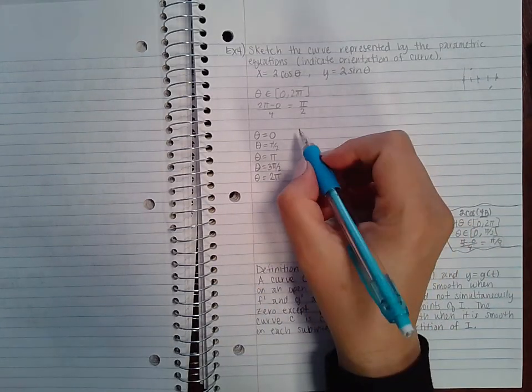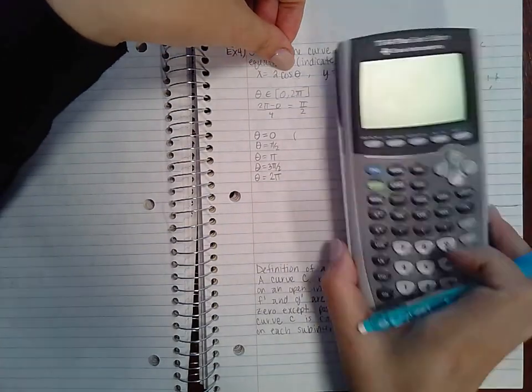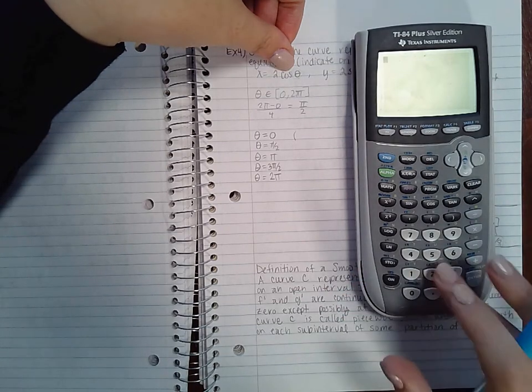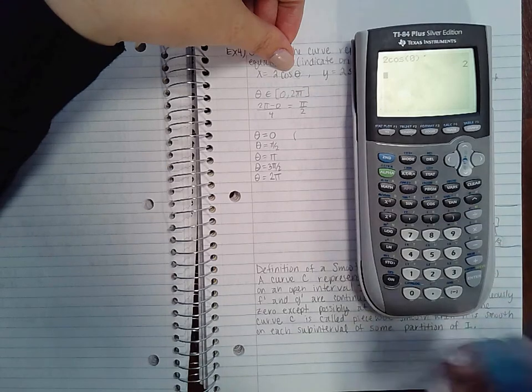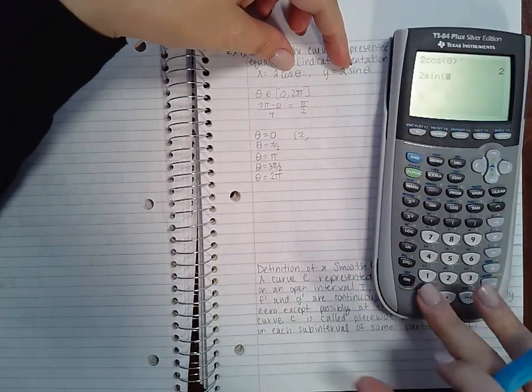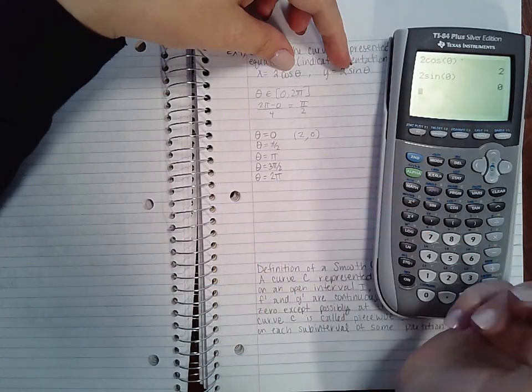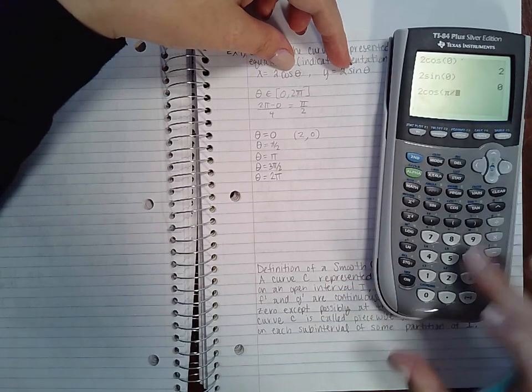So let's go ahead and figure out what our values are going to look like. So we have 2cosine(θ). Now I know what these are, but if you're confused, just literally type them in the calculator. So cosine of zero, that's two, and then over here 2sine(0), that's zero. And so there's my point. You could do the same thing: 2cosine(π/2).